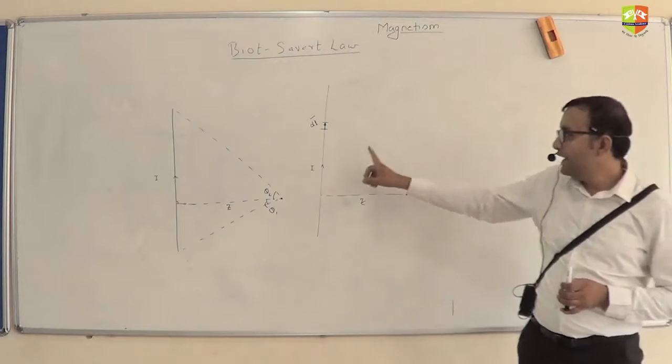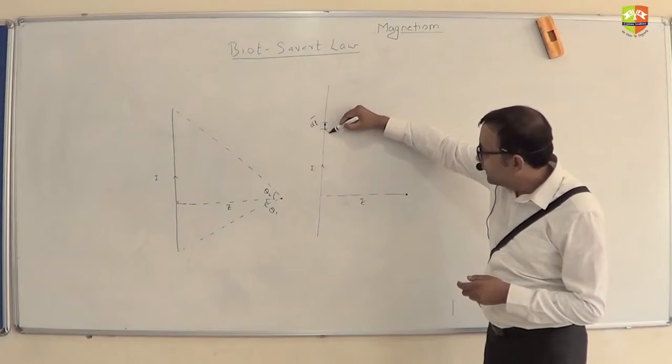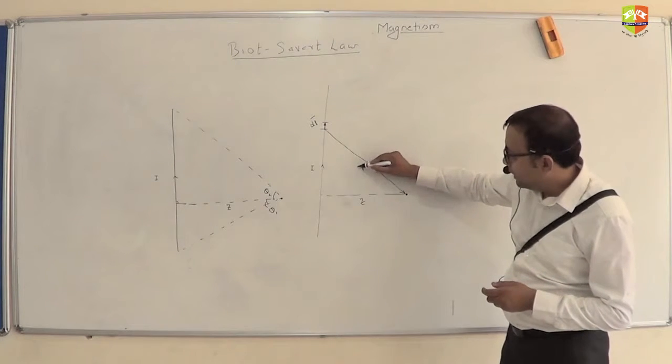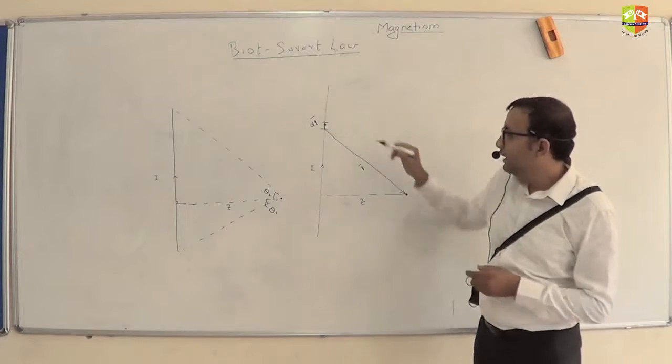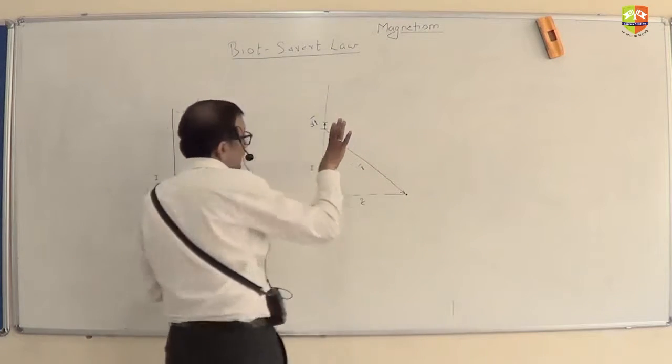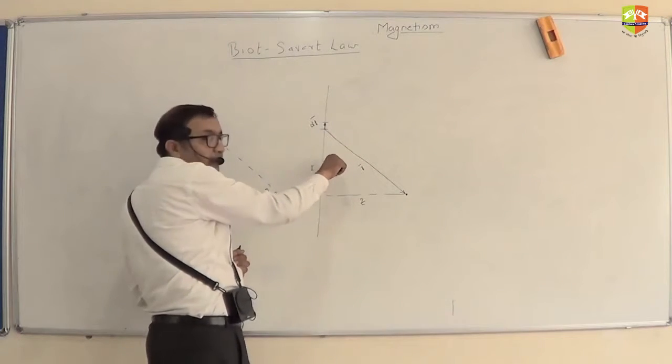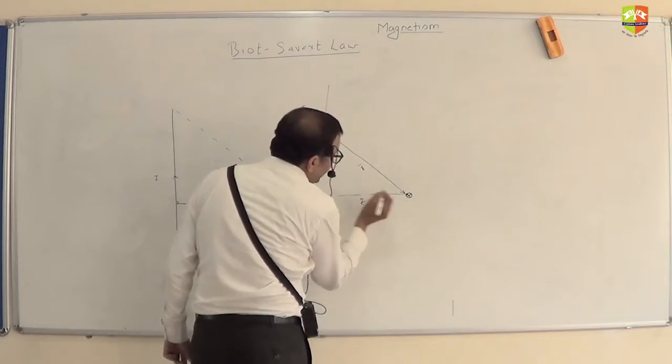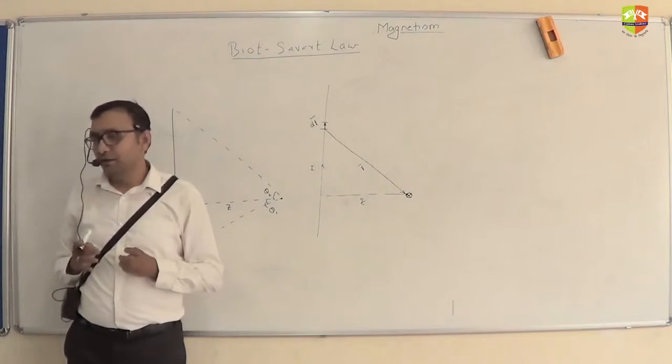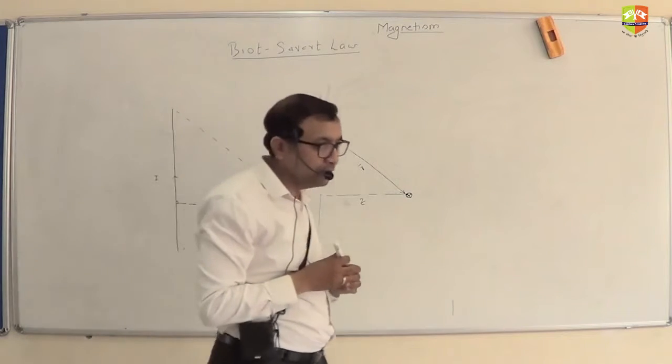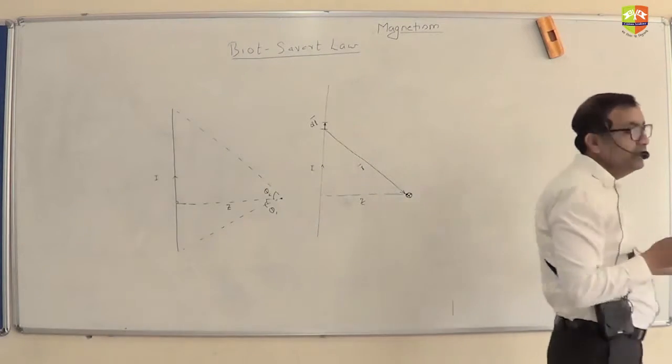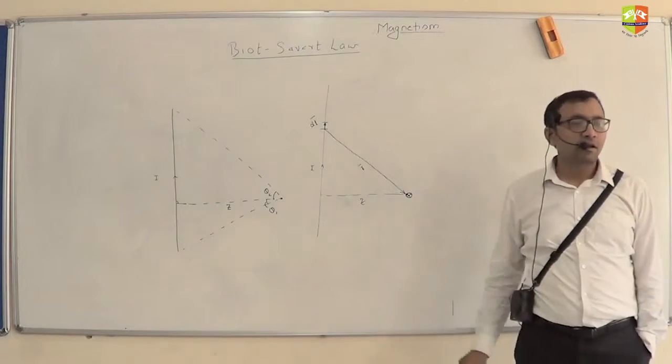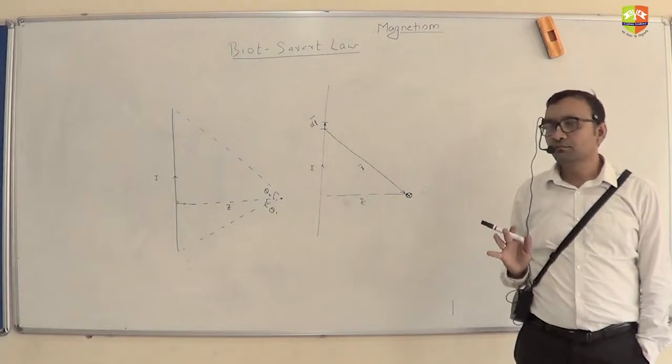Into the plane. dl is like this, and r is like that. This is your r vector. So dl cross r is into the plane. You can see that for all the dl's, magnetic field is into the plane. So you just have to find the magnitude of the magnetic field and integrate it. All the dl's are in the same direction.